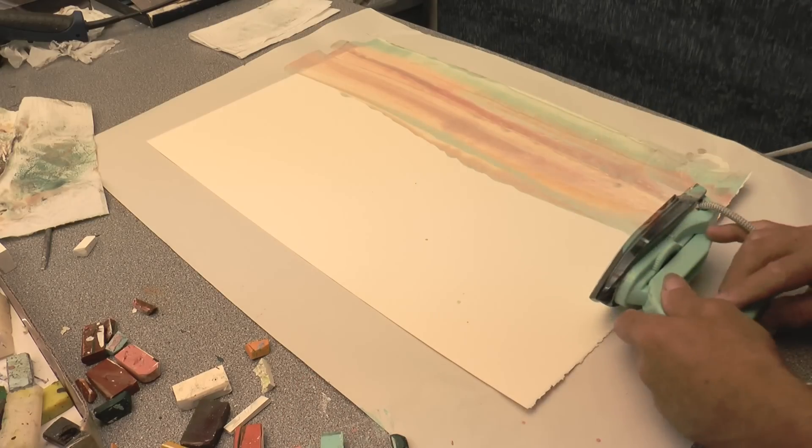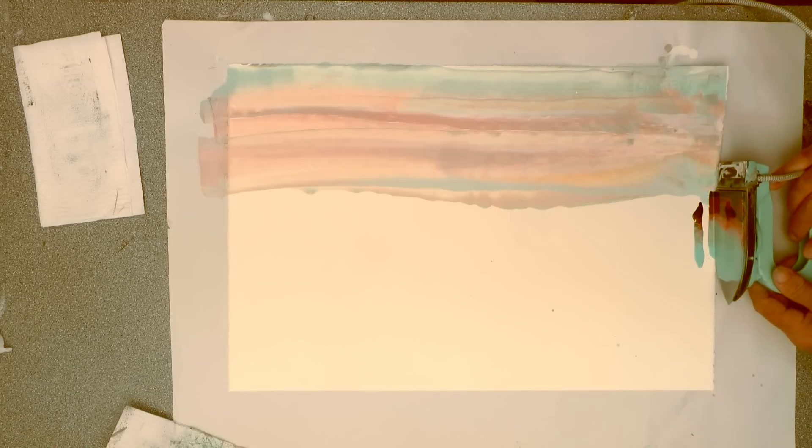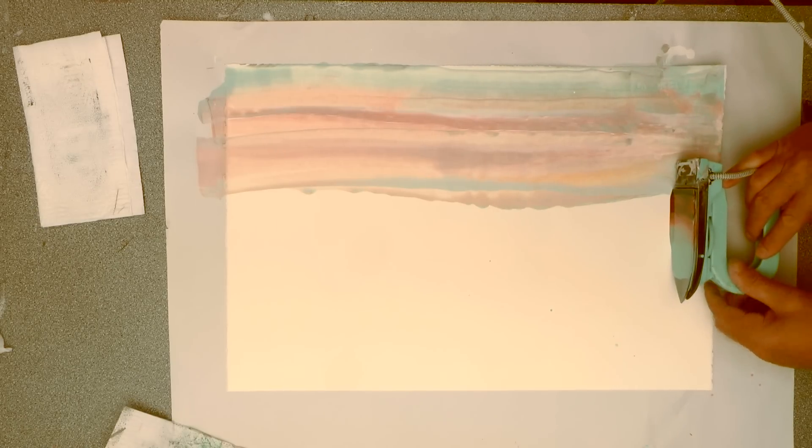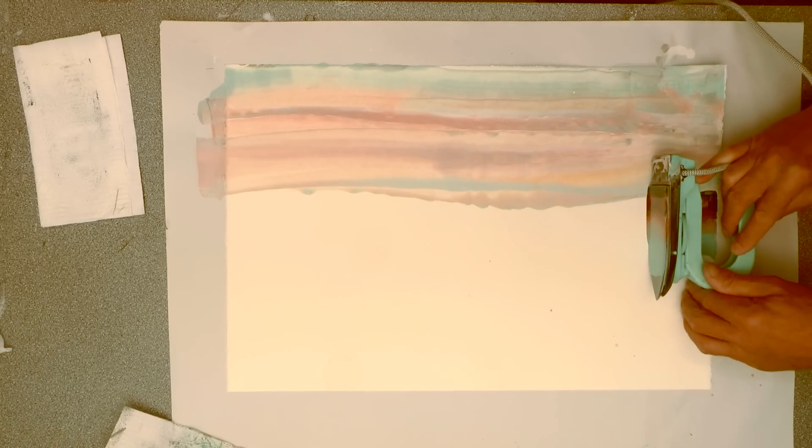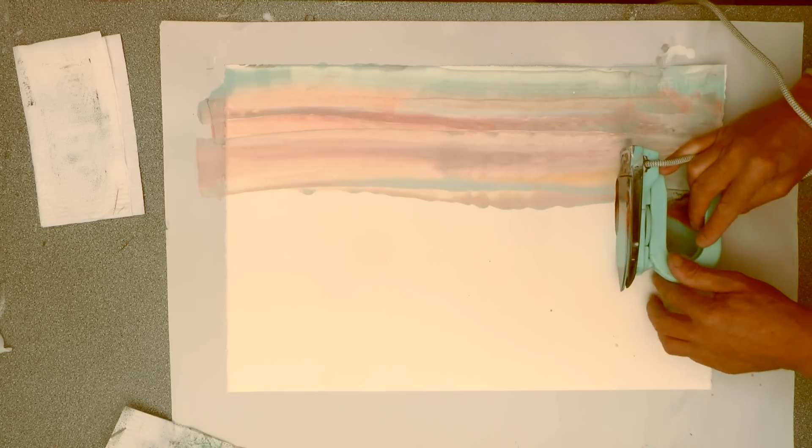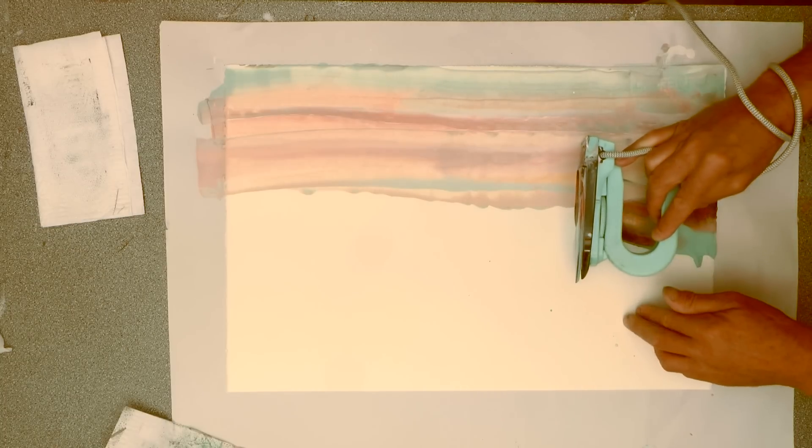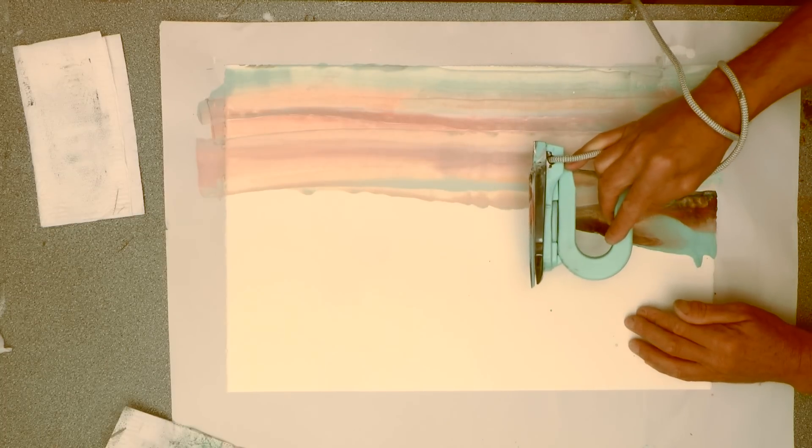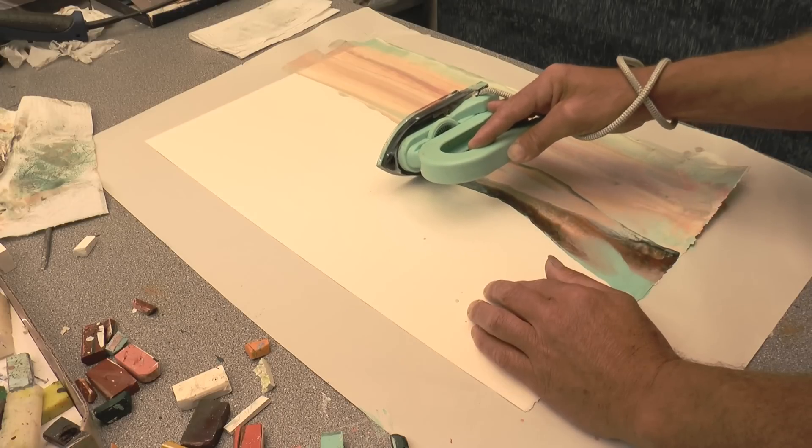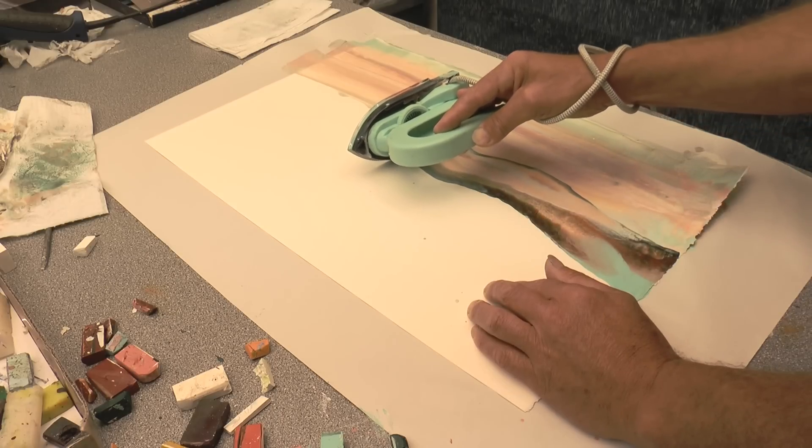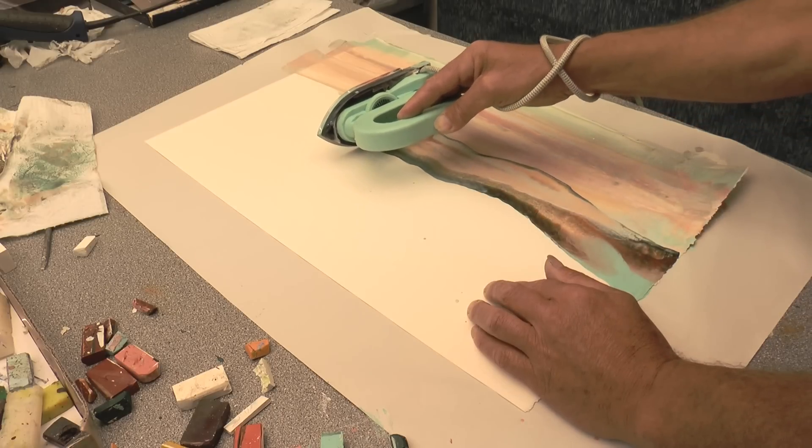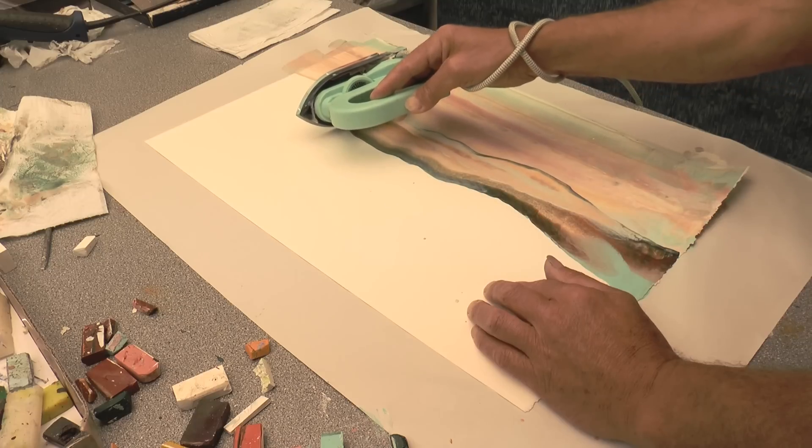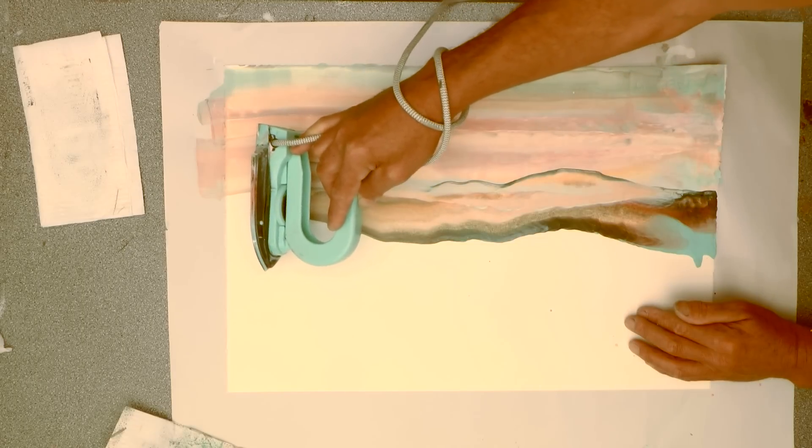Starting off with that edge then. And the top edge of the iron that's there, the square edge, is the one that's defining the actual horizon line. And what you'll notice as it moves across is that where the paper was blank before it goes very dark, but where there was already wax in that sky area it's much lighter. And you only see that line at the top because it's spilling off that top edge of the iron as I move along.